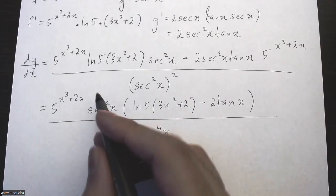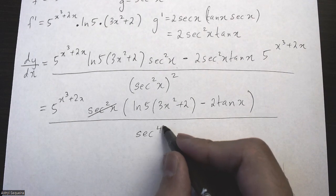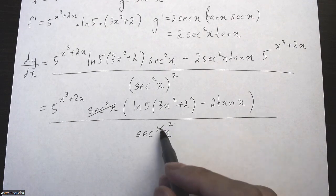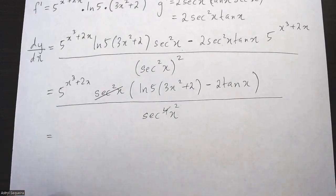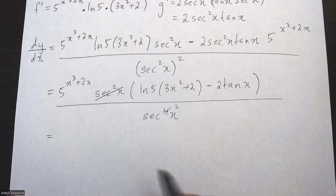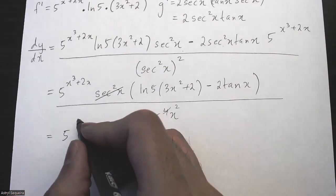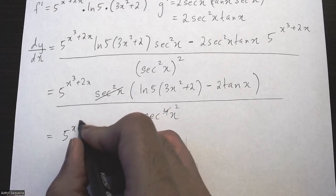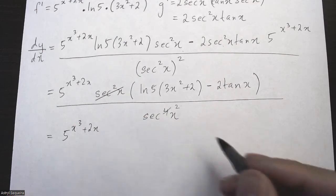Finally, I can simplify this by dividing the top and bottom by sec squared x. This will just become a square because exponent of 4 becomes 2.